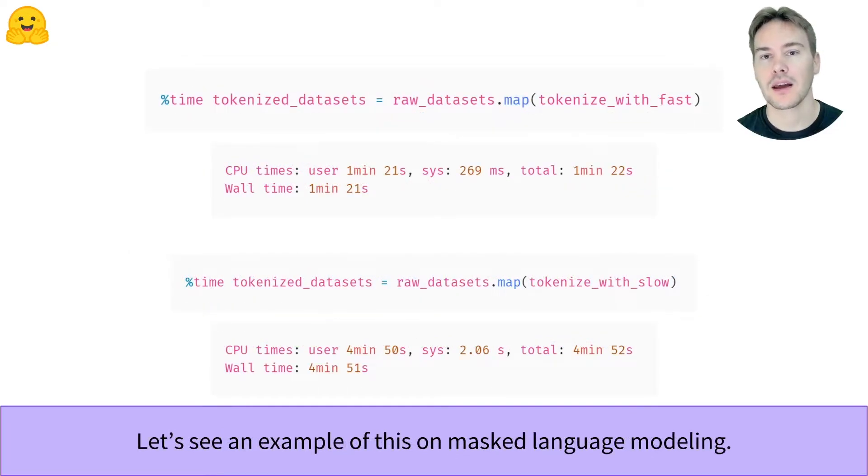In a notebook, we can time the execution of a cell with a time magic command like this. Processing the whole dataset is 4 times faster with the fast tokenizer. That's quicker indeed, but not very impressive.